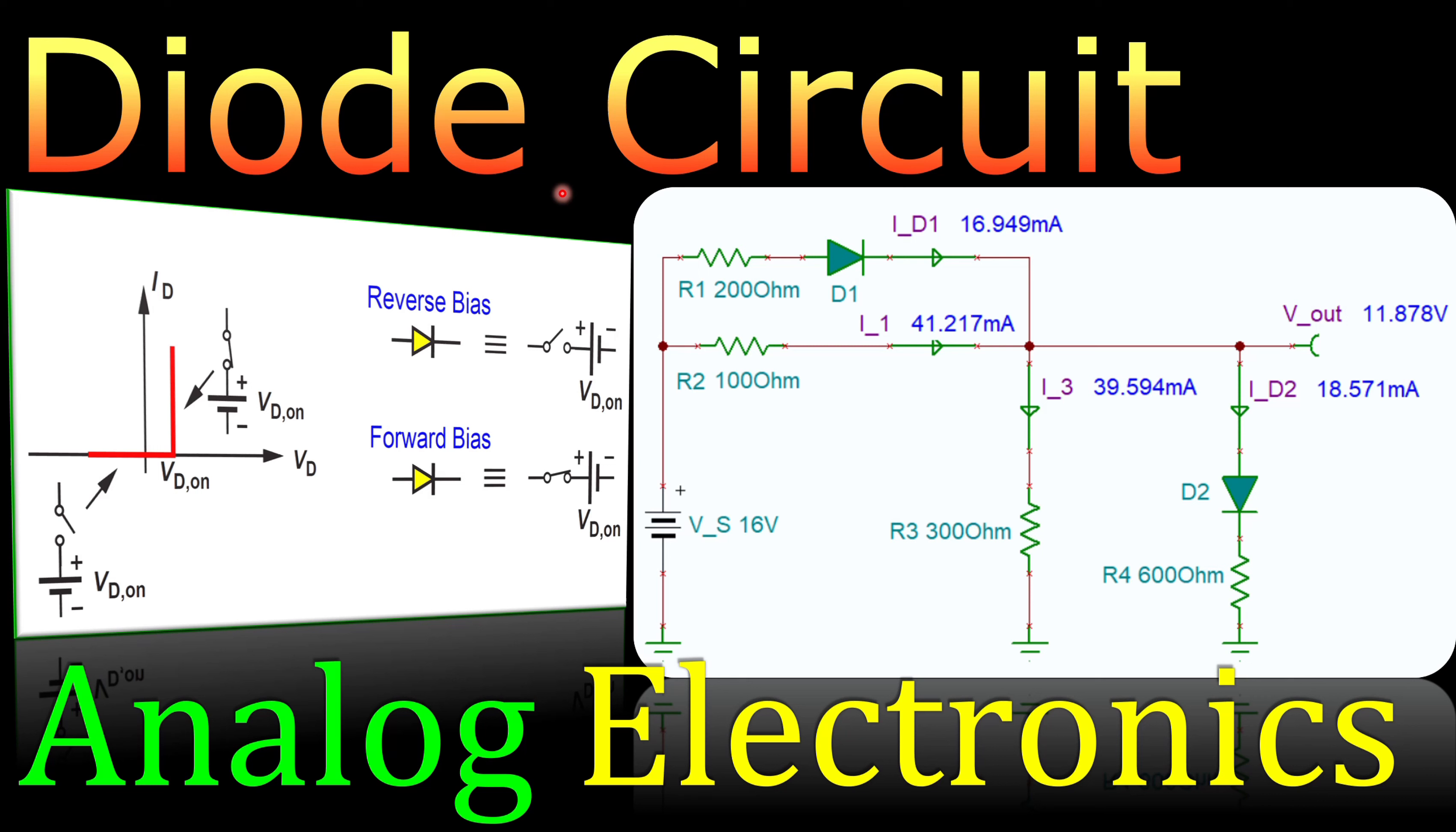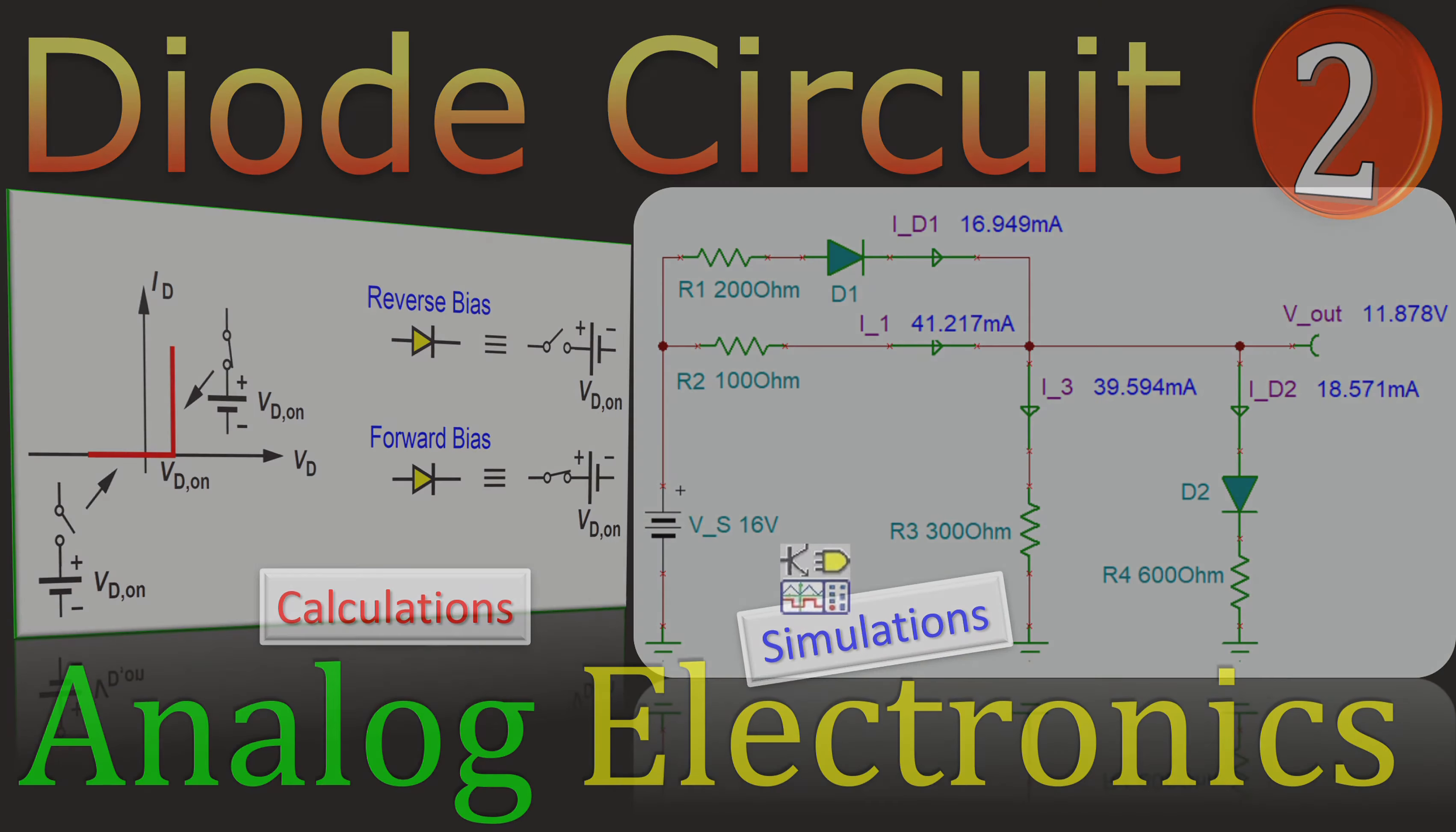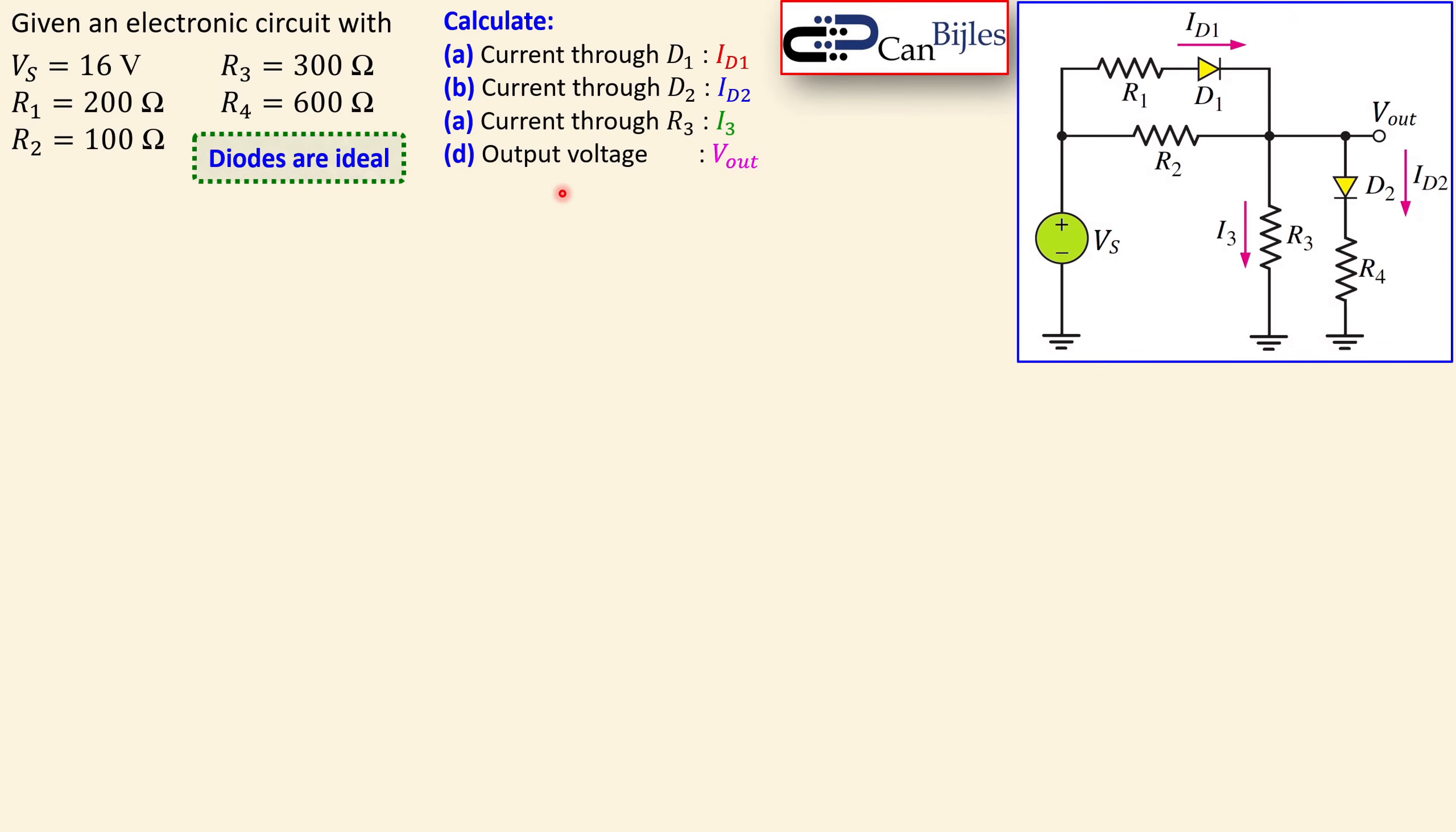Greetings and welcome to a new video about analog electronics. We continue with our diode circuits and this will be our second example. In this example we'll look at a circuit where we have two diodes. In the first example we looked at a circuit where we had only one diode. Of course we will look at our calculations step by step and also verify these in SPICE simulations.